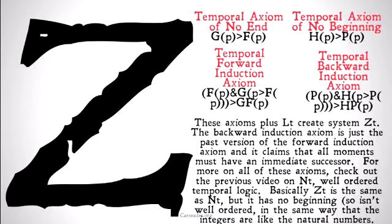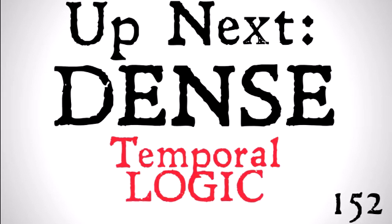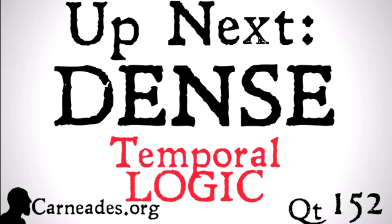ZT is going to be the same as NT, but it has no beginning, so it isn't well-ordered — in the same way that the integers are like the natural numbers. Hopefully that makes sense. Up next, we're going to be looking at dense temporal logic, also known as QT. Watch a new video every single day for three months here at carneades.org, and stay skeptical, everybody. See you next time.